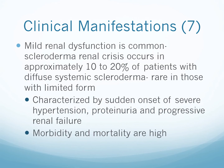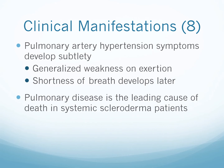Mild renal dysfunction is common. Scleroderma renal crisis occurs in approximately 10 to 20 percent of patients with diffuse systemic scleroderma, and is rare in those with the limited form. It is characterized by sudden onset of severe hypertension, proteinuria, and progressive renal failure — morbidity and mortality are high. Pulmonary artery hypertension symptoms develop subtly with generalized weakness on exertion, later progressing to shortness of breath. Pulmonary disease is the leading cause of death in systemic scleroderma patients.